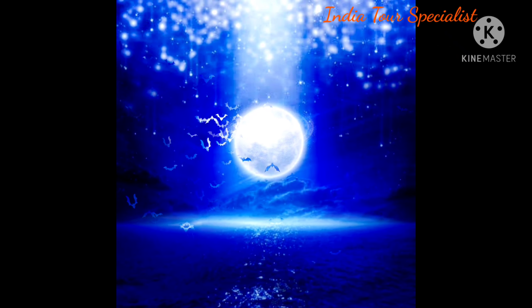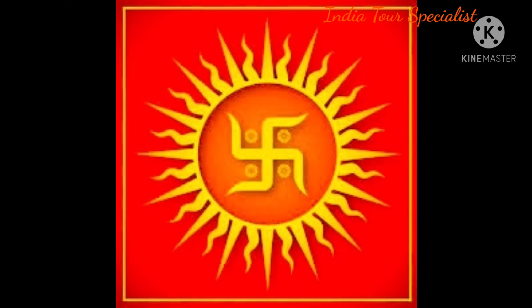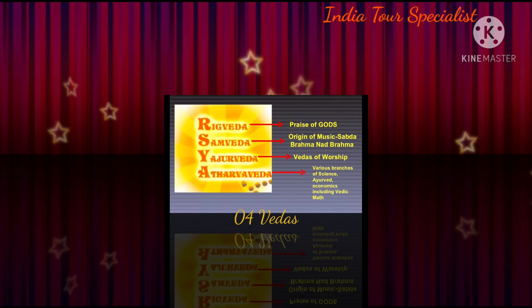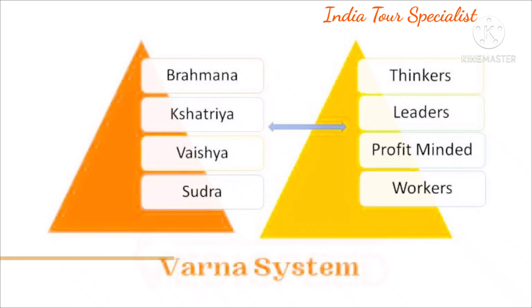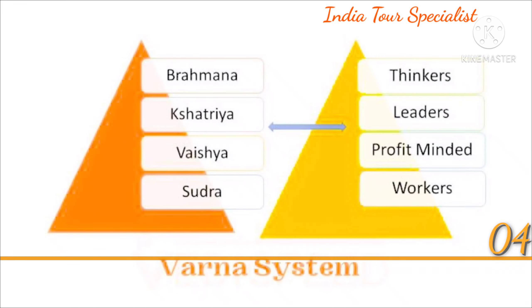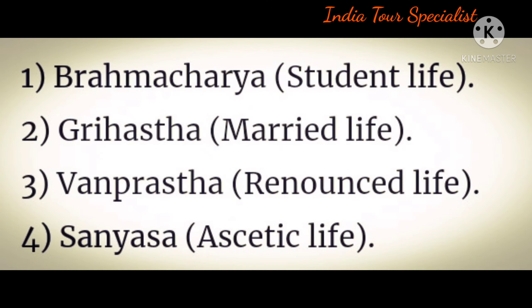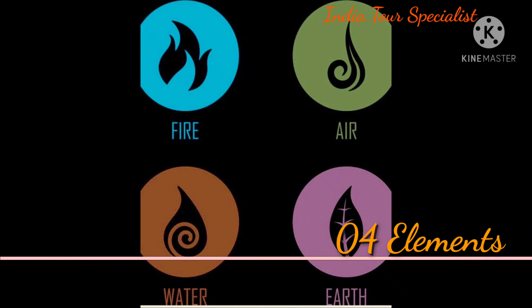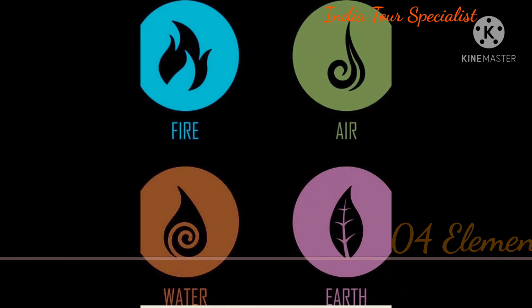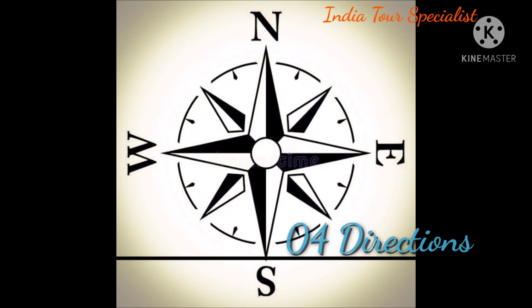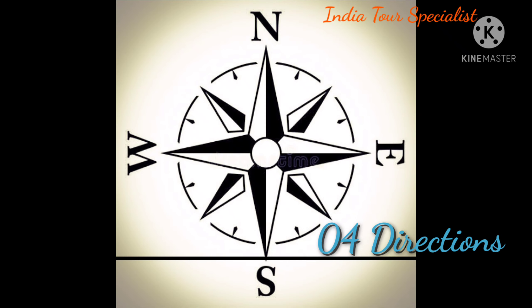As per Sanatana Dharma, the four arms of the Swastika symbolize the four Vedas, four Varnas, four Ashrams, four Lokas, four elements — namely earth, fire, water, and air — and the four directions: north, south, east, and west.